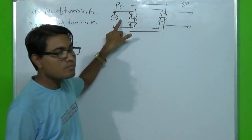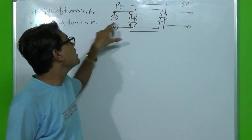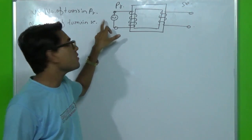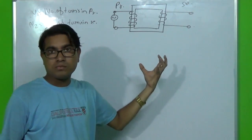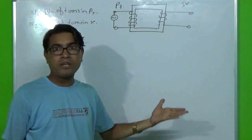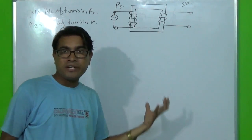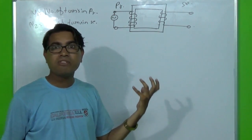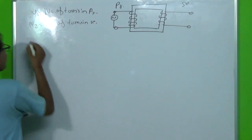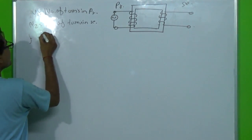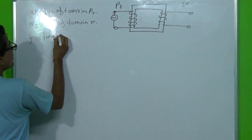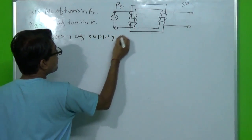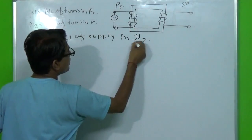This primary winding is connected to an AC supply source. We assume that the supply source has a frequency of F Hertz — F is the frequency of supply in Hertz.